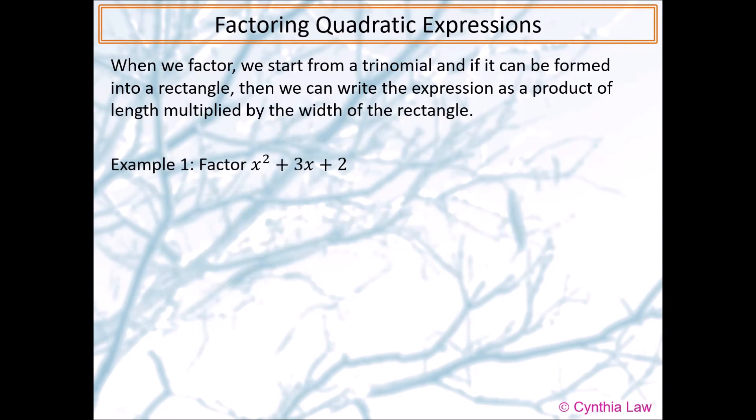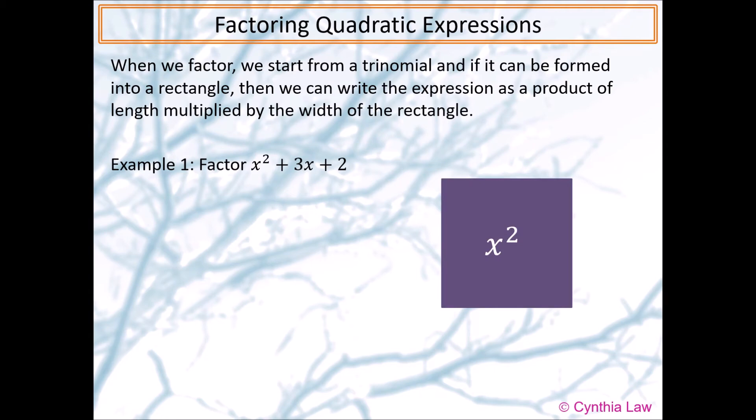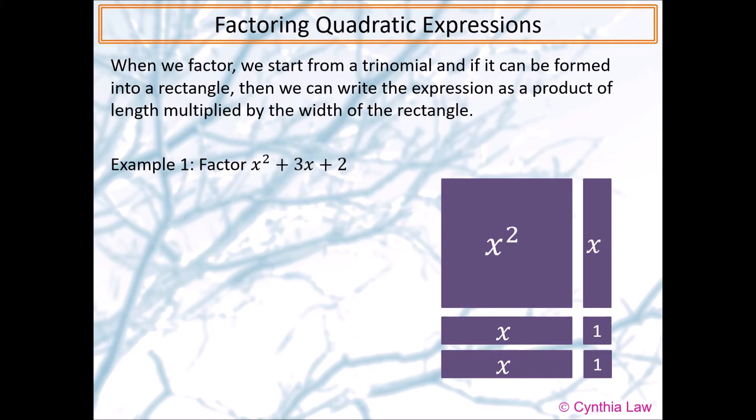First, we place the large square down. Then, we place the small squares at the bottom right of the large square in a column or a row. Here, I have placed them in a column. Then, we use the three rectangle strips to fill in the space. One, two, and three.